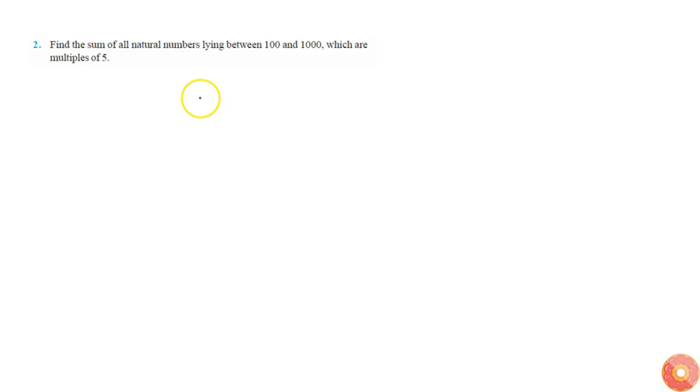In this question we are asked to find the sum of all natural numbers lying between 100 and 1000 which are multiples of 5. So that means it starts at 105 and 110 and 115, so on it goes till 995.